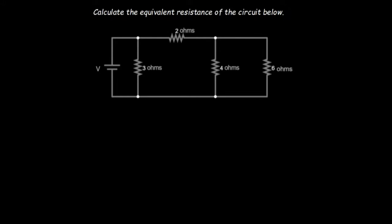Let's try our hands on another example. We are supposed to calculate the equivalent resistance for this circuit on the screen. First, identify the series and parallel connections of the resistors. Looking at the circuit, the 4 ohms and the 6 ohms resistors are in a parallel connection because they share two common nodes, and we can move from the 4 ohms to the 6 ohms without passing through any other circuit element.